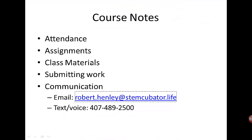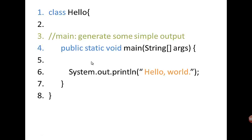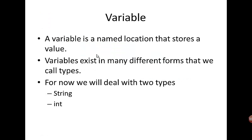Alright, so today we are going to talk about variables and types. Last week we created a simple program that simply printed the string "hello world" to the screen. Today we are going to enhance that program by using variables. A variable is a named location that stores a value in the computer's memory. Variables operate similarly to variables in algebra — you know, if a equals 3, x equals y, things of that nature.